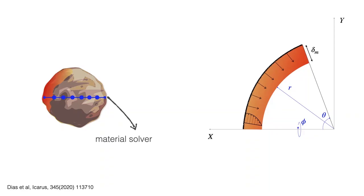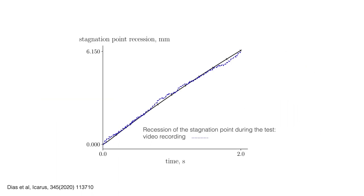As a first step, we built a simple material solver able to estimate the melting for stony metal materials. Afterwards, we derived a shear ablation model starting from the incompressible Navier-Stokes equations within the molten layer. This melting model, together with the evaporation presented previously, enabled us to study the material degradation at the stagnation point. This figure shows the stagnation point recession obtained with our models and the comparison with the experimental results.